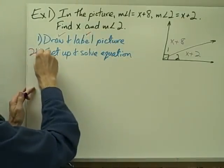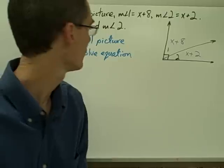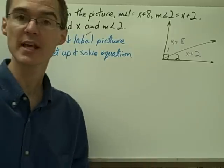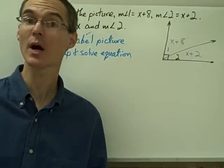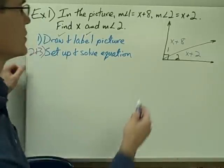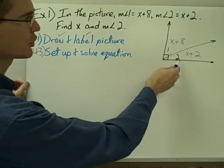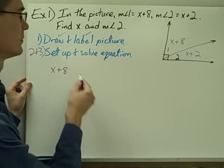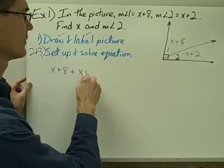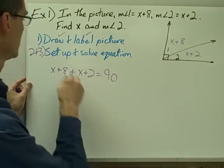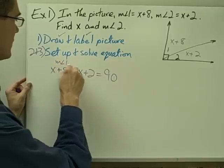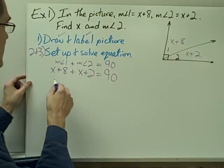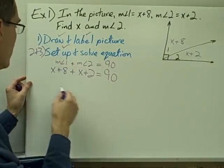Steps 2 and 3 are to set up and solve my equation. I'm going to use what I know about complementary angles as a problem-solving tool. Since angle 1 and angle 2 are complementary, they add up to 90 degrees, so the measure of angle 1 plus the measure of angle 2 equals 90 degrees. Substituting in: x plus 8 plus x plus 2 equals 90. Now I just need to solve it.